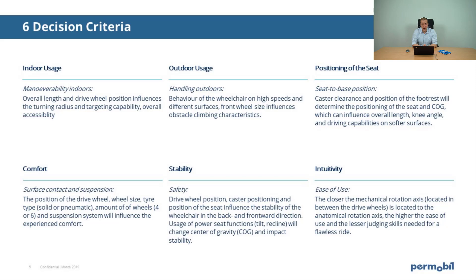The second criterion is outdoor usage: how does it behave when driving on different surfaces, at high speeds, or when climbing obstacles? The third criterion is the positioning of the seat. The position of the seat on the wheelchair base will determine the caster clearance and where the center of gravity is located. The positioning of the seat can influence the overall length of the wheelchair, the knee angle, and the capabilities of driving on softer surfaces. The fourth criterion is comfort — how the wheelchair base can dampen shocks and reduce vibrations to contribute to a better comfort for the user.